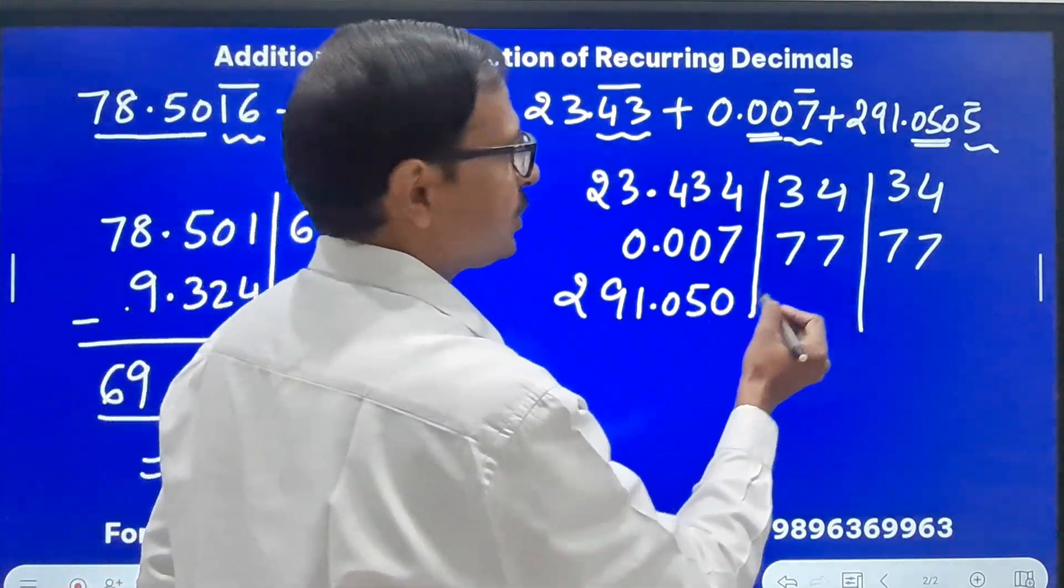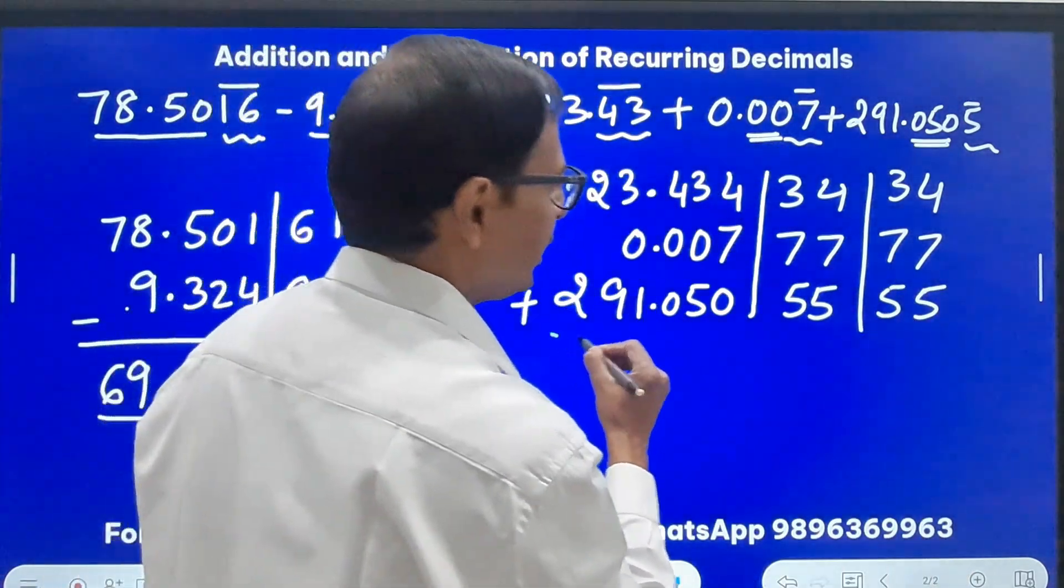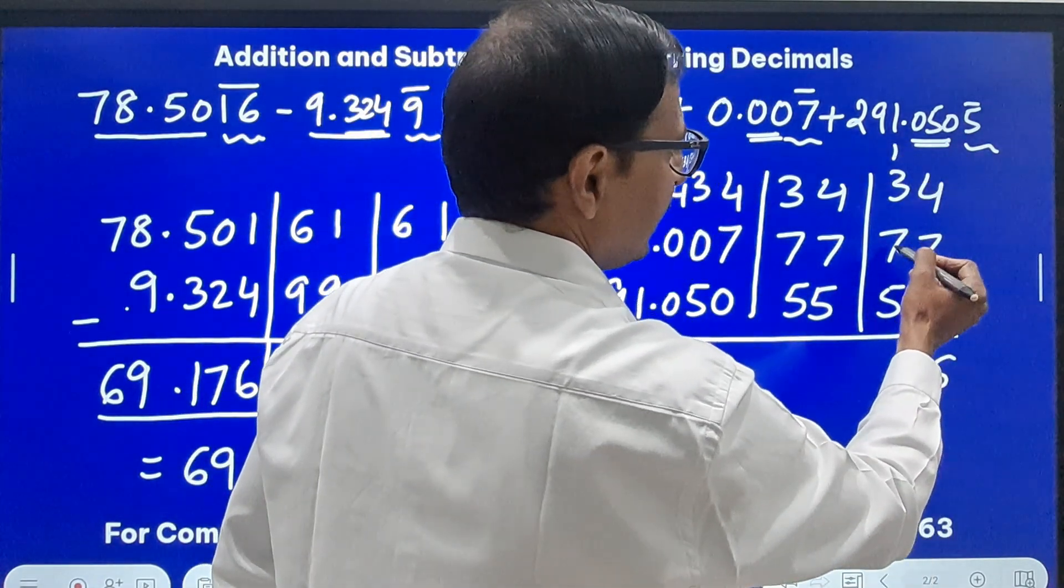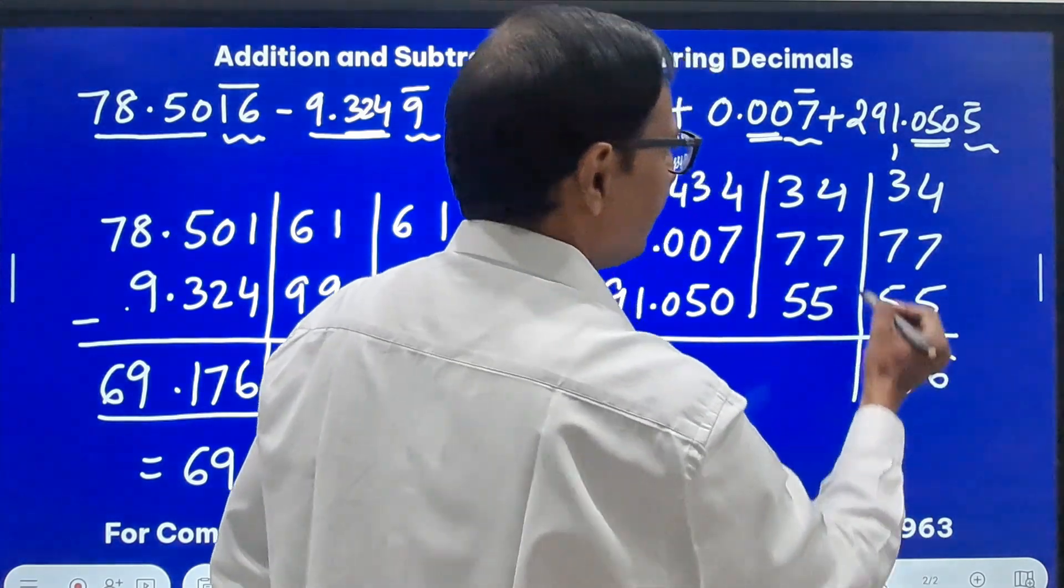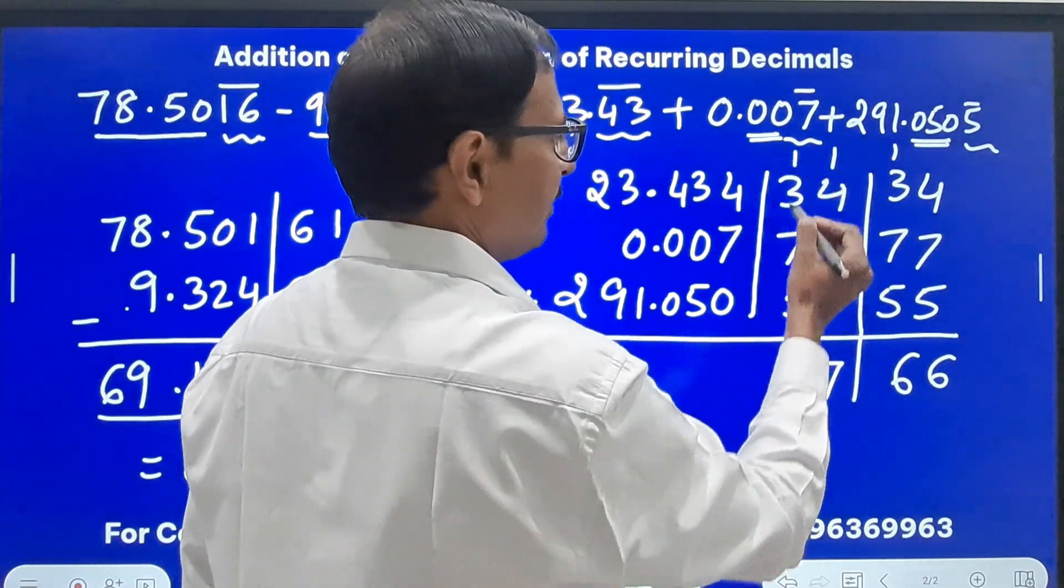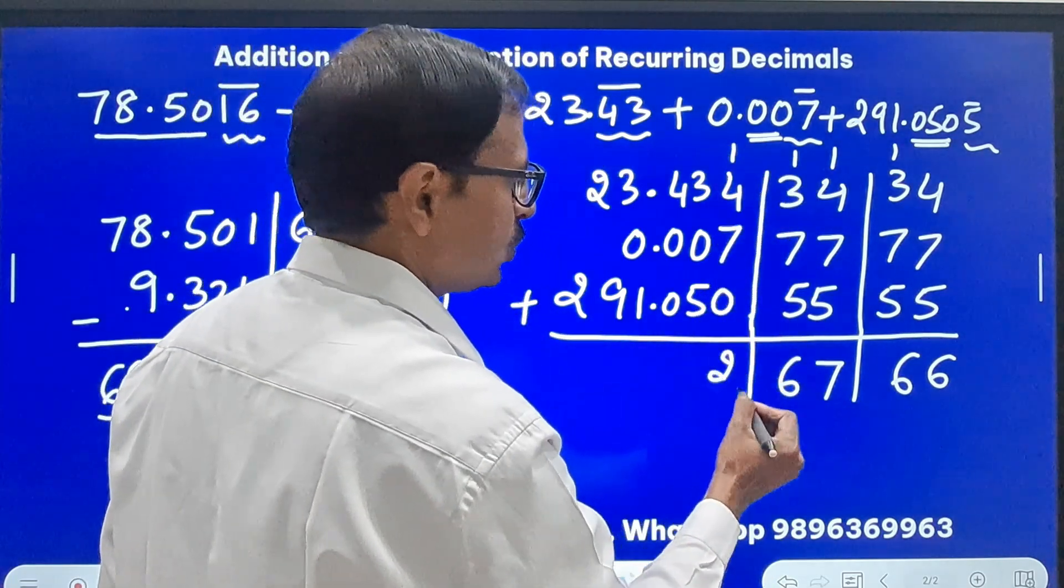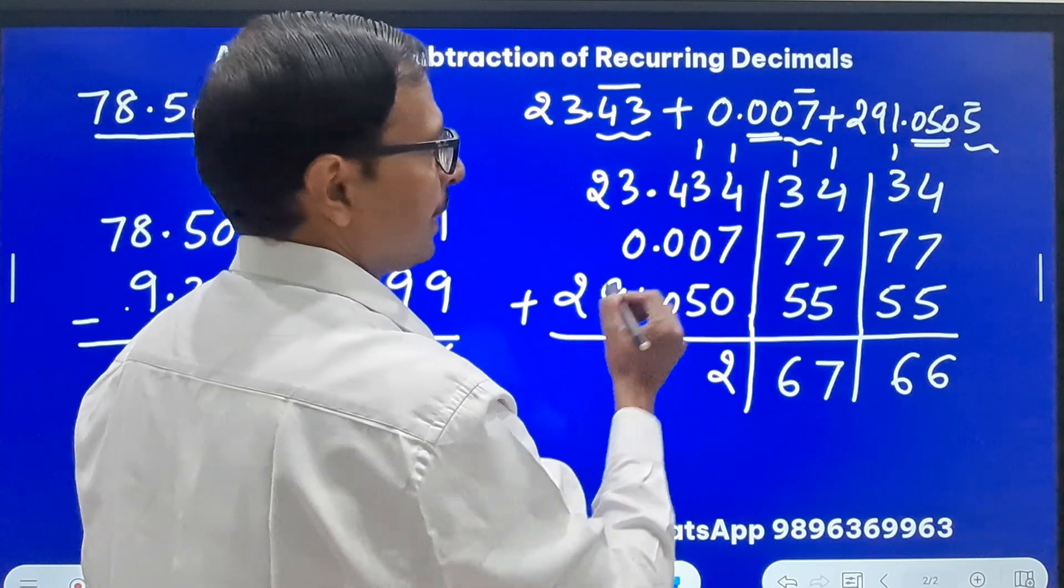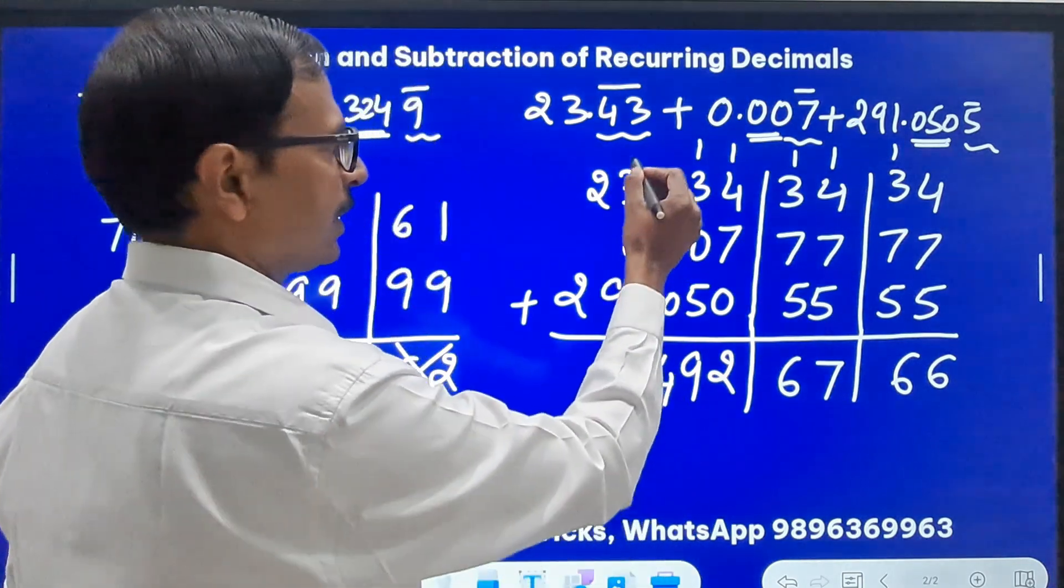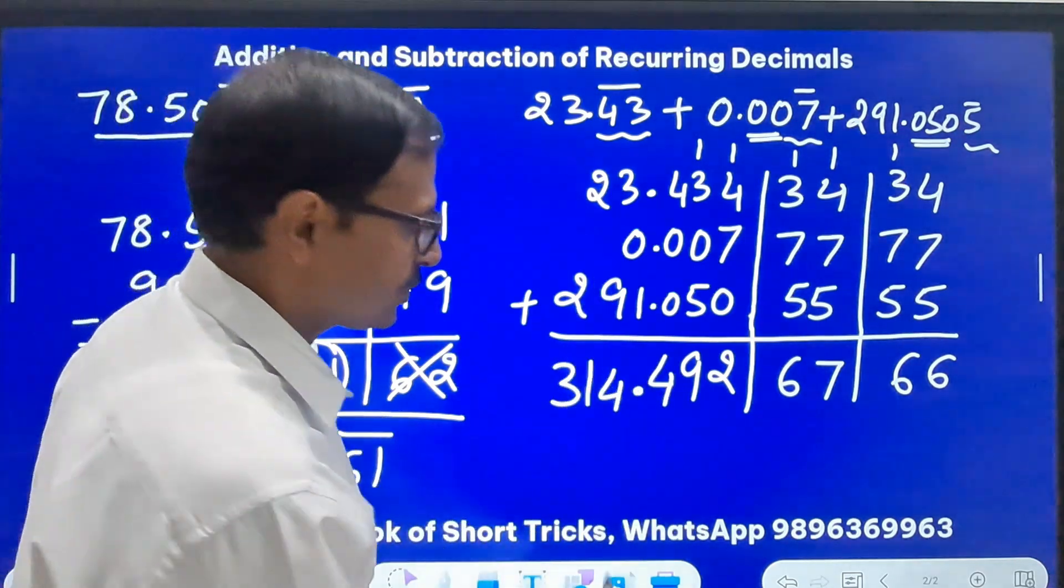Now I need to perform the addition. 7 plus 4, 11, 16, 6, 1 carry, 10, 11, 16, 6, and 1 carry, 11, 12, 12, 2, and a 1 carry. And then 4 and 5, 9. And then this is 4.3 plus 1, 4, 9 plus 2, 11, 1, 1 carry, and a 3.